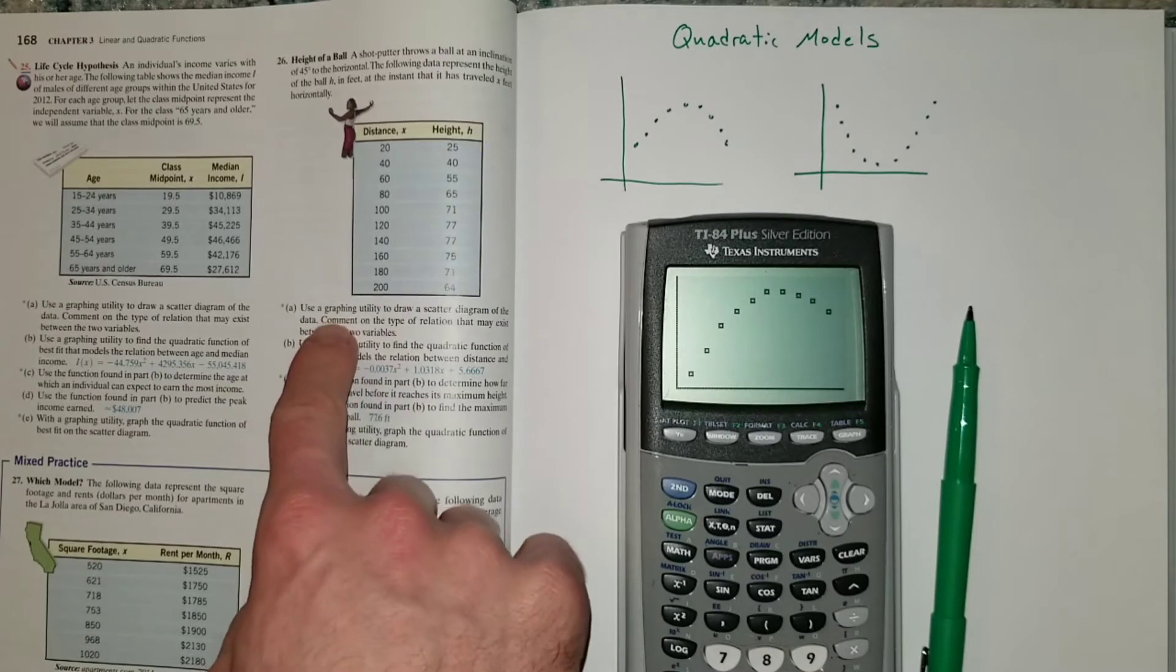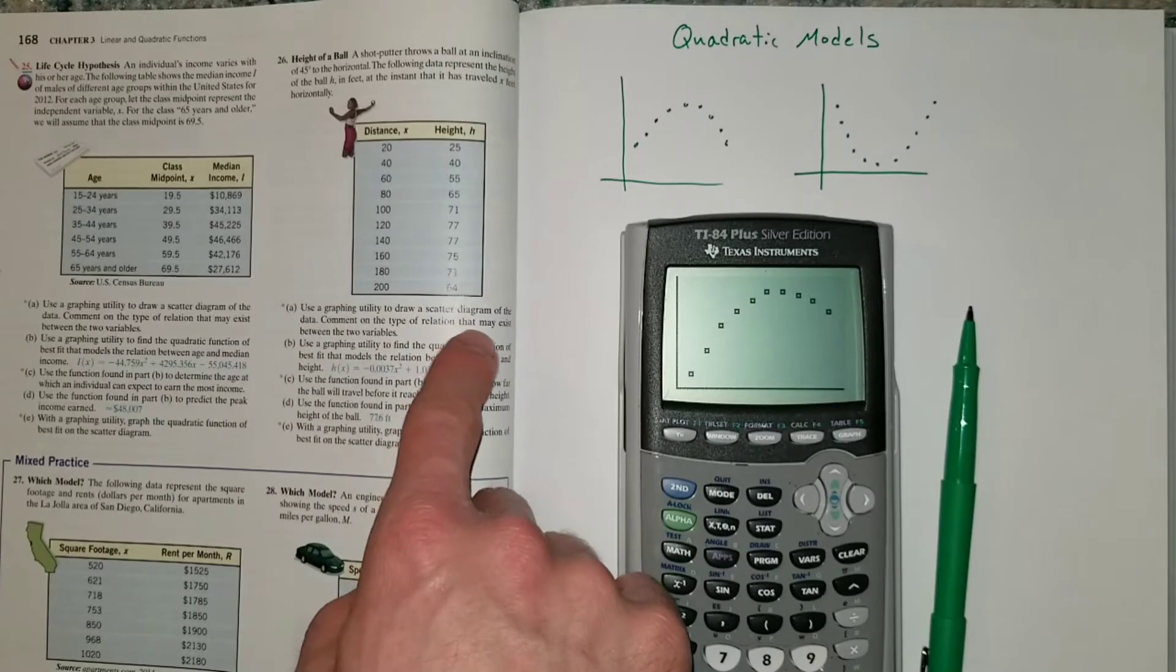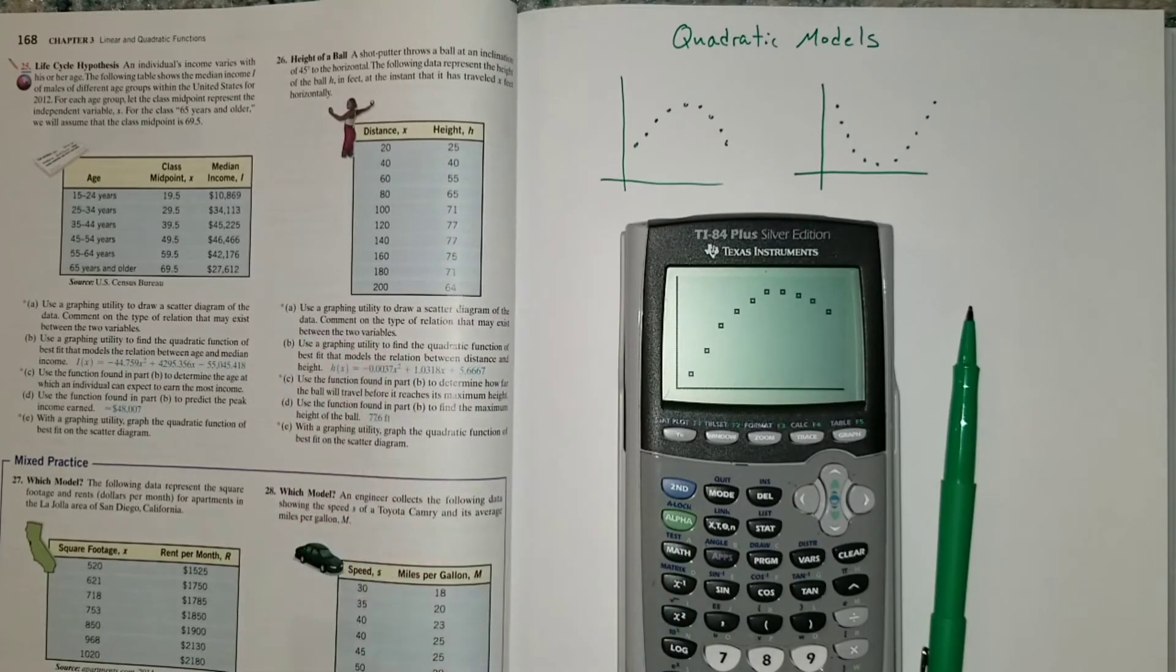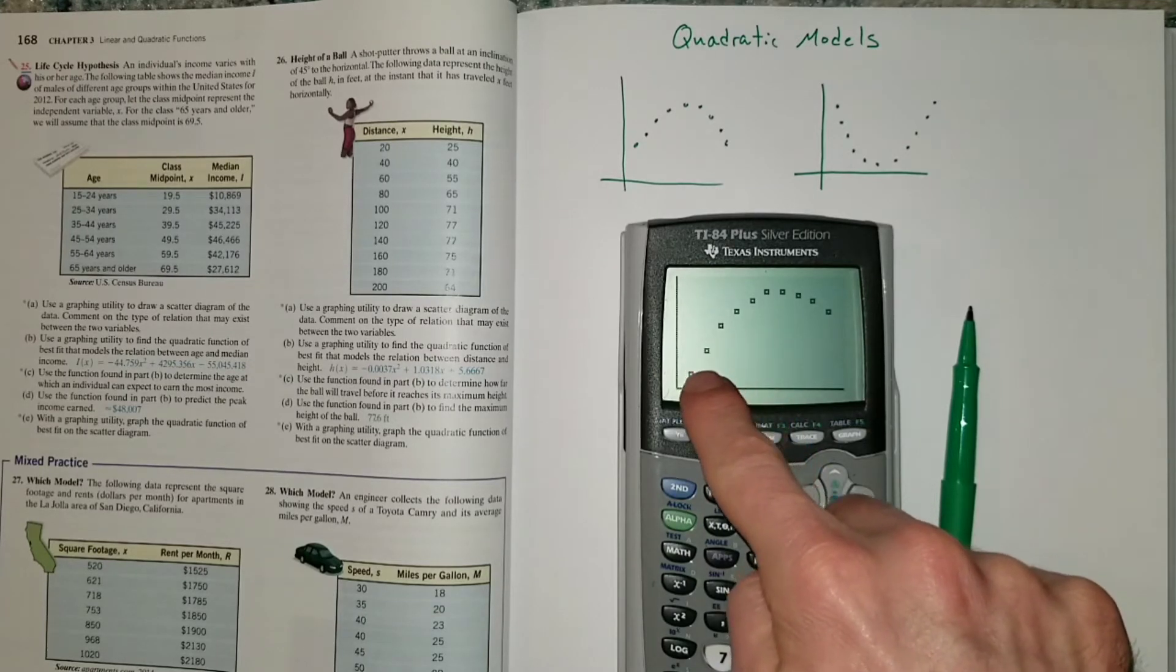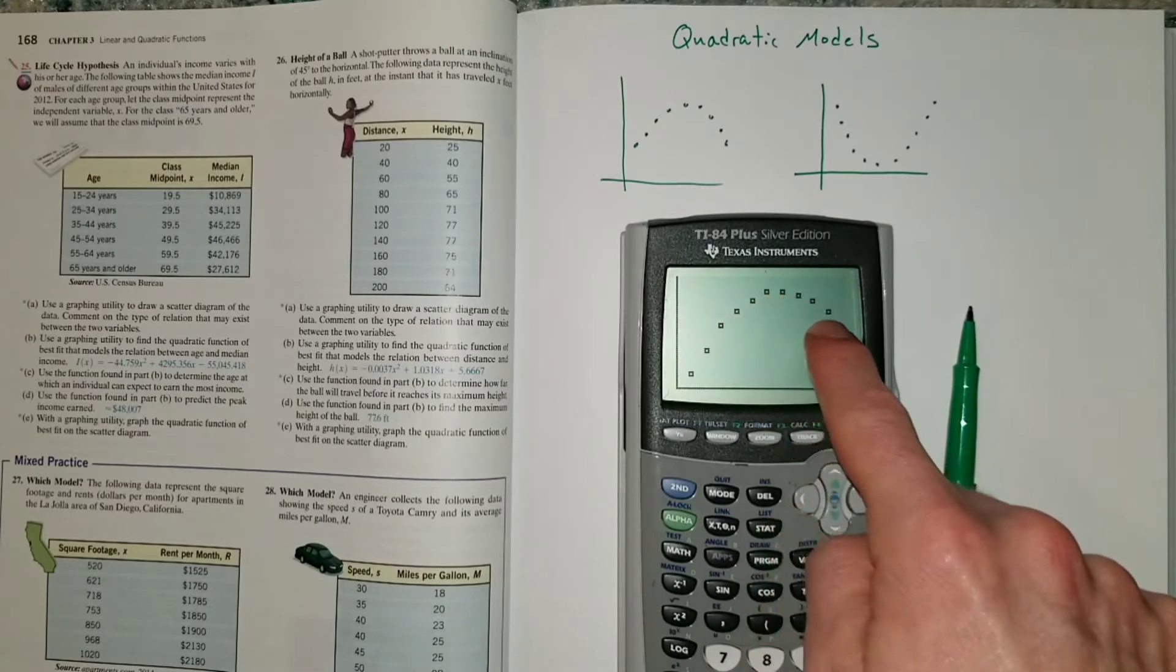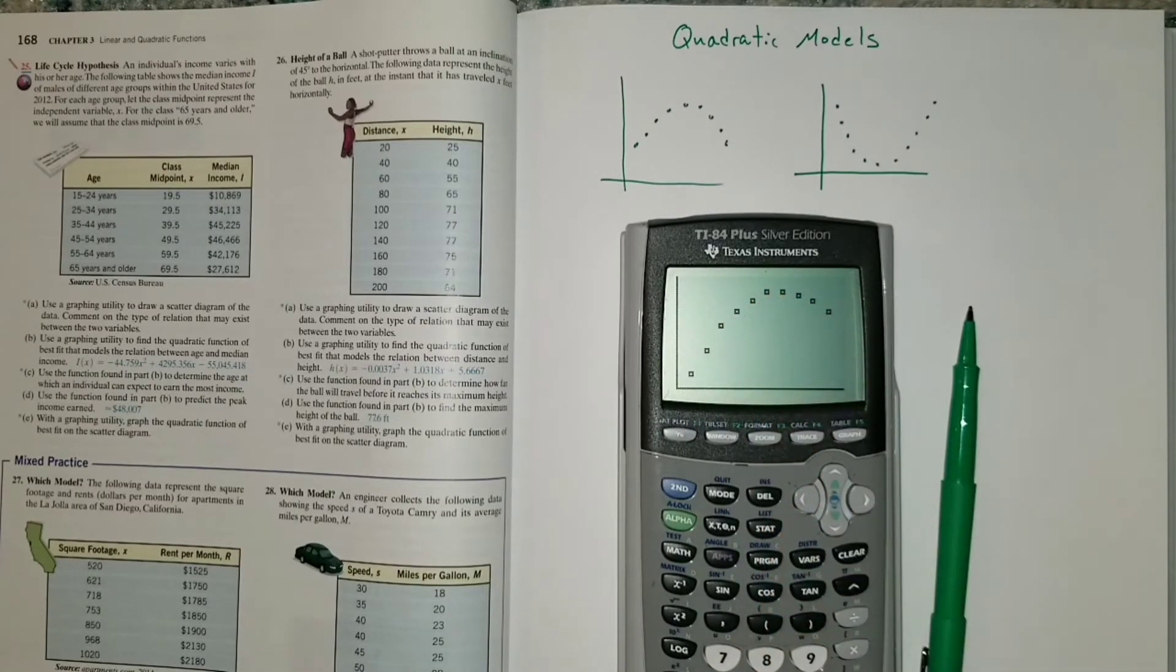And so you can see it definitely has that increasing and then decreasing trend in the data. Nice smooth curve, it looks. And so then it just asks to comment on the type of relation that may exist between the two variables. So I would say something there like there is an increase followed by a decrease in the height as the distance increases or something like that. And so just to describe this general trend of increasing, leveling off, and then decreasing. But of course you could put that in your own words.